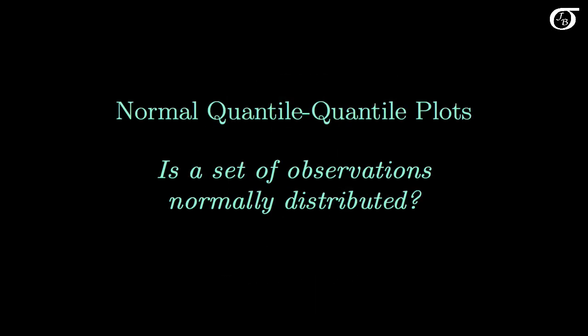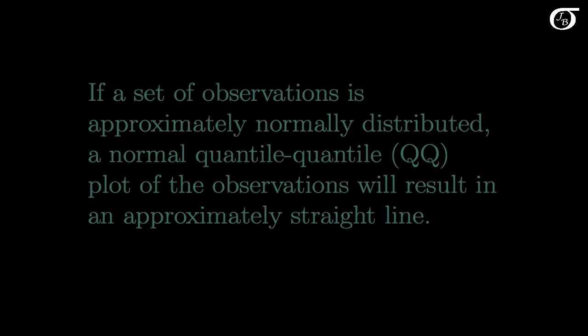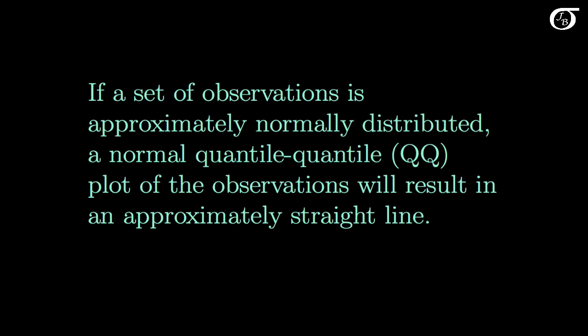Let's look at normal quantile-quantile plots, which can help answer the question: is a set of observations approximately normally distributed? If a set of observations is approximately normally distributed, a normal quantile-quantile plot of the observations will result in an approximately straight line. We sometimes call a quantile-quantile plot a QQ plot for short.